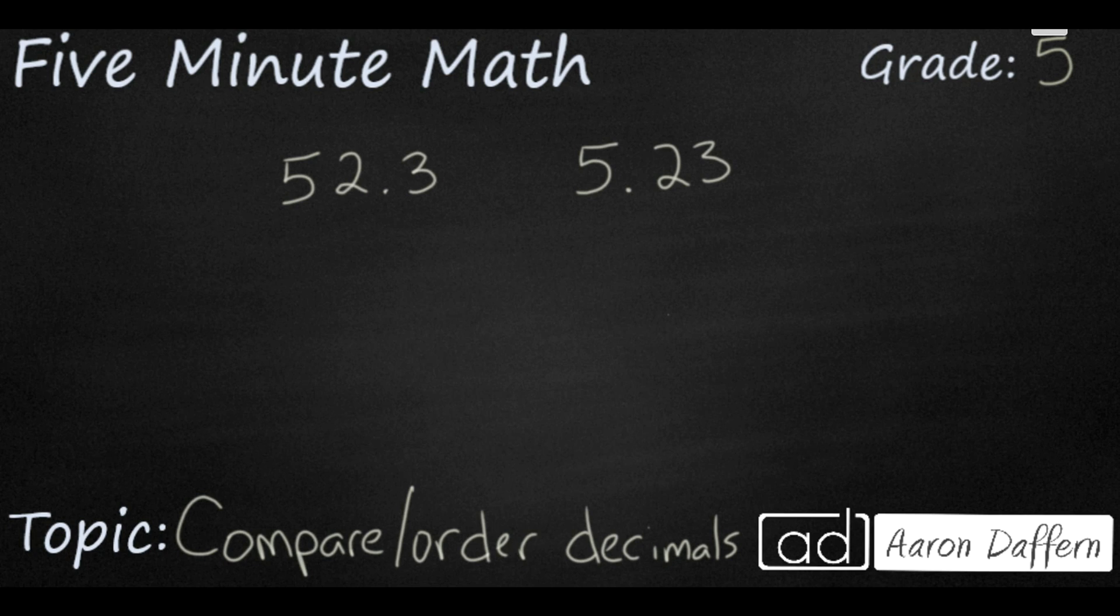You see on the screen I'm going to start with two decimals. We have 52.3 or 52 and 3 tenths. Then I'm using the same digits. I simply put the decimal in a different place. The number on the right is 5.23 or 5 and 23 hundredths. And it doesn't matter how far the decimal stretches out to the right. You're always going to start with the largest place value.